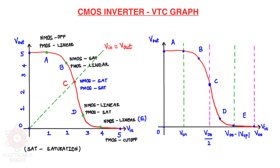Based on these observations, here we have a graph called the voltage transfer characteristics, or DC transfer characteristics graph, for the CMOS inverter. It shows the five different regions of operation, how NMOS and PMOS behave in each, and the generalized range of input values.